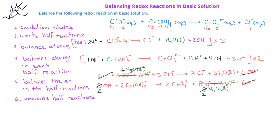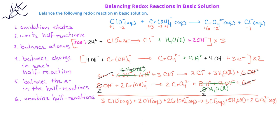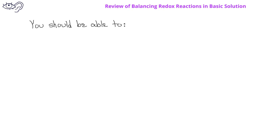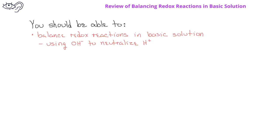Once we've canceled everything out, the final balanced equation is: three ClO⁻ (aq) plus two OH⁻ (aq) plus two Cr(OH)₄⁻ (aq) produce three Cl⁻ (aq) plus two water (l) plus two CrO₄²⁻ (aq). After watching this video, you should be able to balance redox reactions in basic solution by remembering to add hydroxides to neutralize any hydrogen ions present in the oxidation or reduction half reactions.